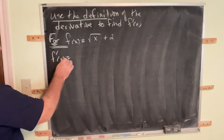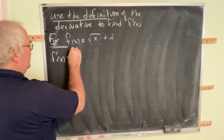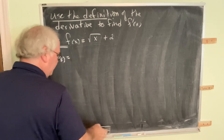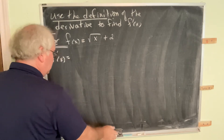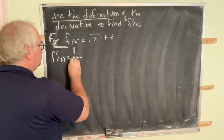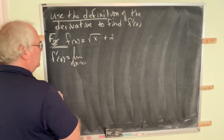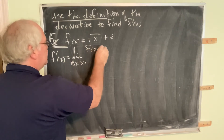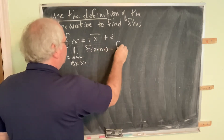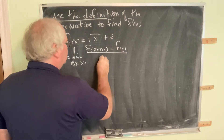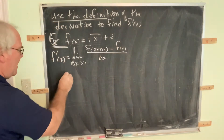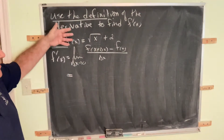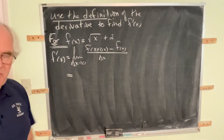All right, so let's see what we have here. We need f prime of x, which is equal to the limit as delta x goes to zero of f of x plus delta x minus f of x, all over delta x. Assuming that limit exists — if it doesn't exist, we say the derivative doesn't exist, and that's the end of the problem.